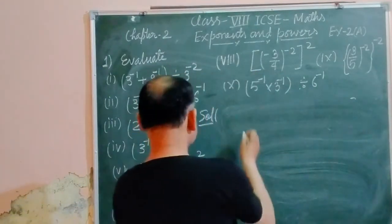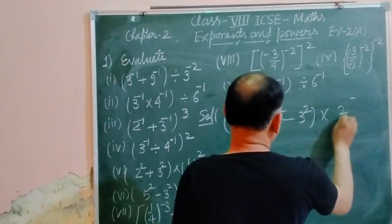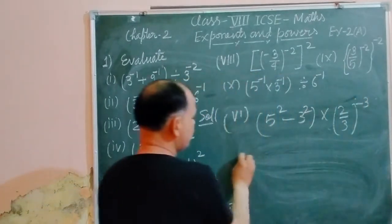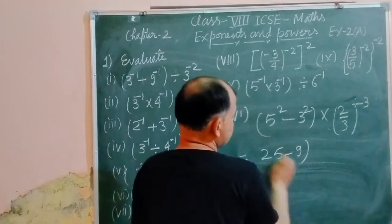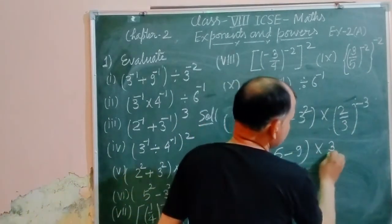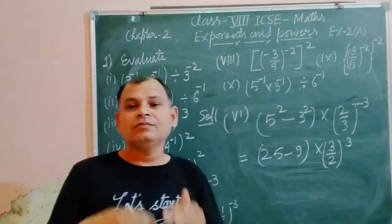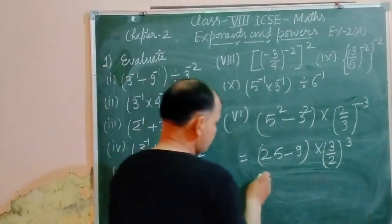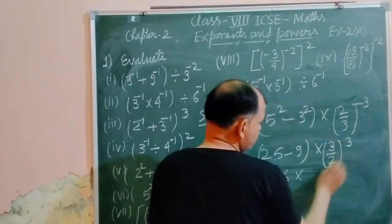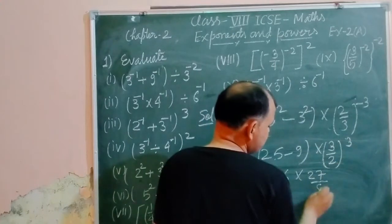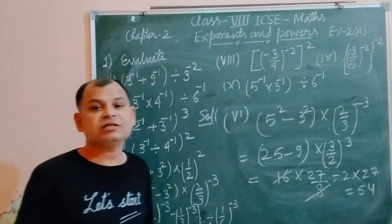Now the sixth part: 5 to the power 2 minus 3 to the power 2 into 3 to the power minus 2 over 2 to the power minus 3. We compute 5 squared = 25 and 3 squared = 9. Reversing the negative powers: 3 to the power minus 2 becomes 2 cubed over 3 squared, and 2 to the power minus 3 becomes 1 over 8. So 25 minus 9 = 16, times 27 over 8 gives 16 times 27 over 8 = 54. The answer is 54.